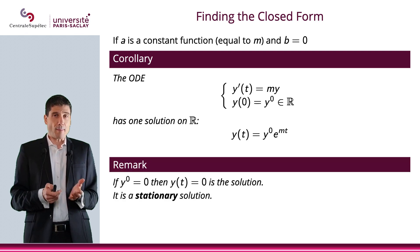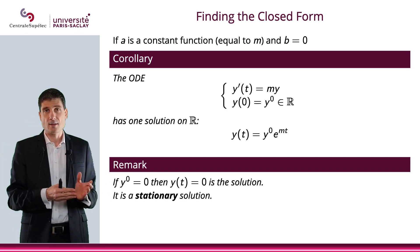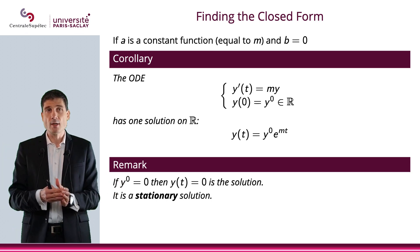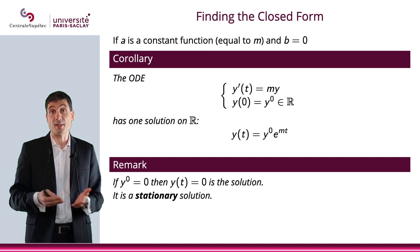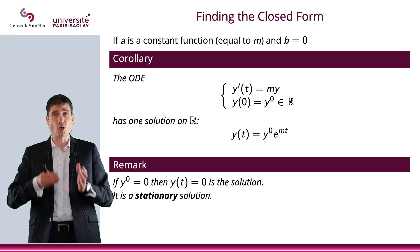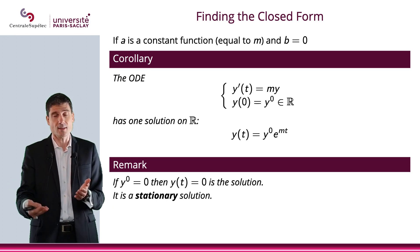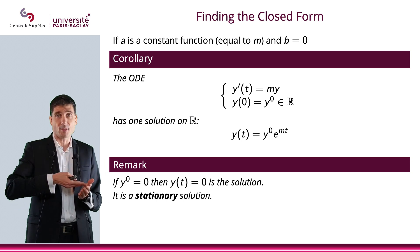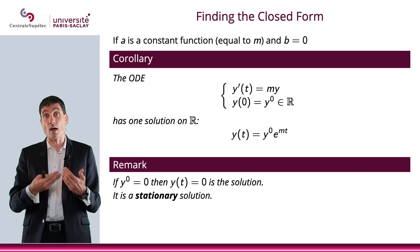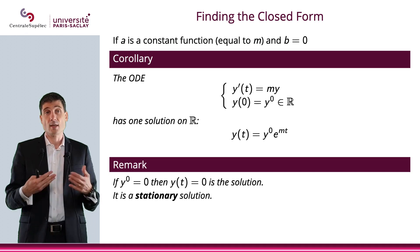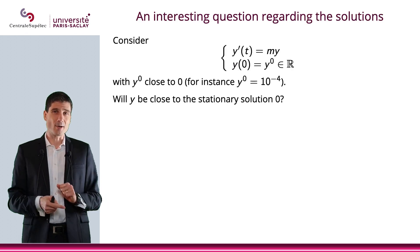You can probably remark that when y0, the initial condition, is equal to 0, then the solution to the initial value problem is simply 0. Which makes sense: if you start with 0, the entire derivative is 0, because m times y is 0. So you start with 0, the derivative is 0 all the way, and what you get is a function which is constant, stationary, equal to 0 on the entire real line.